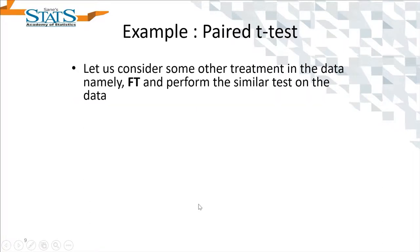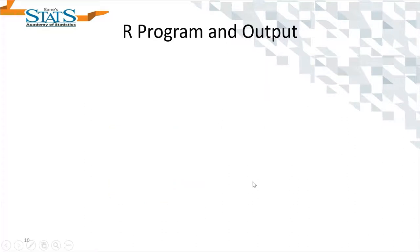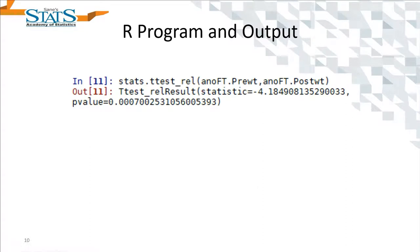Let us consider another treatment from the same dataset. This time I have subsetted it for a treatment called FT. For this treatment let us consider a one-tailed test. Generating the same output with this new subset, we see that the p-value is really less than 0.05.